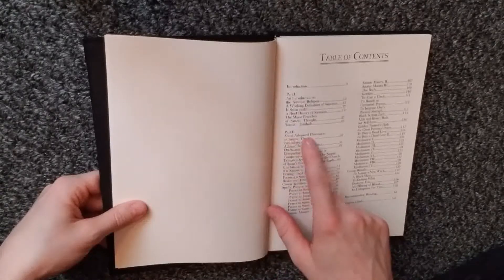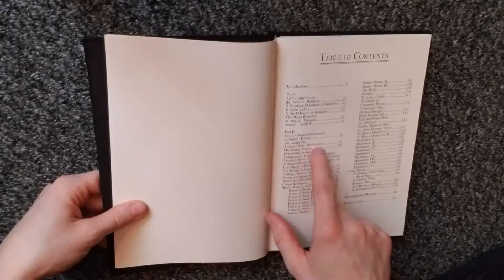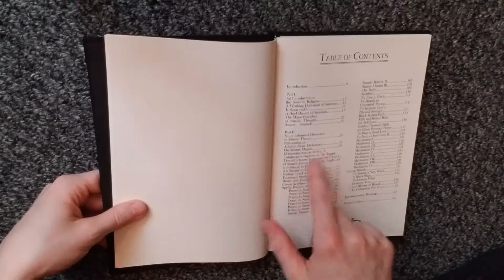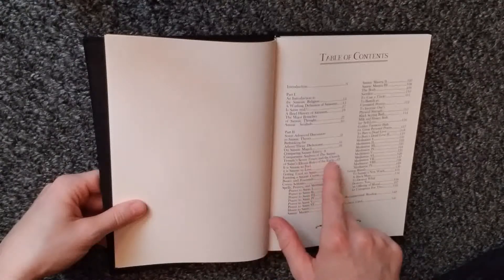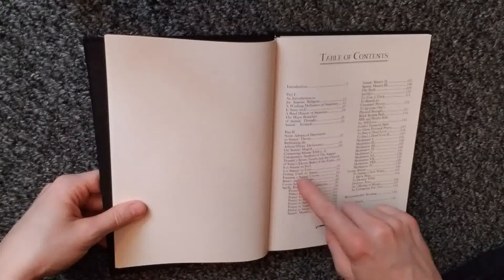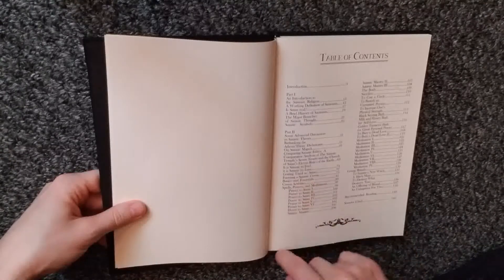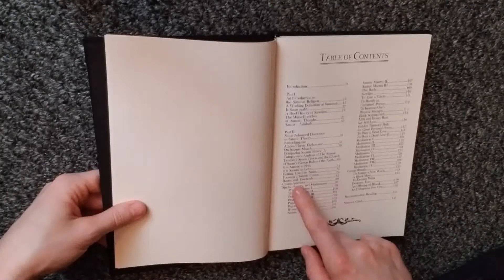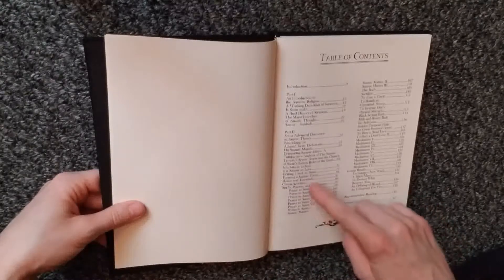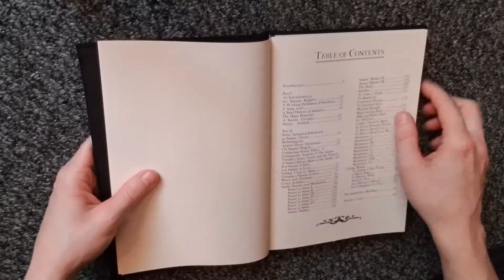Part 2, Some Advanced Discussion in Satanic Theory, Rethinking the Atheist-Theist Dichotomy on Satanic Magic, Comparing Satanic Ethics, A Comparative Analysis of the Satanic Temple's Seven Tenets and The Church of Satan's Eleven Rules of the Earth, It Is Satanic to Feel, It Is Satanic to Love, Getting Used to Satan, Forming a Satanic Coven, Basics and Essentials, Coven Activities.